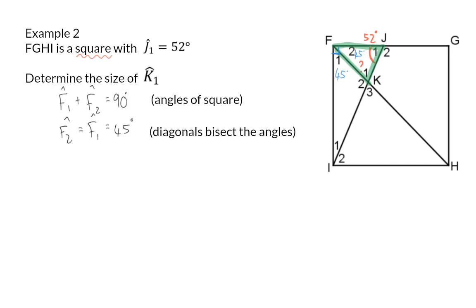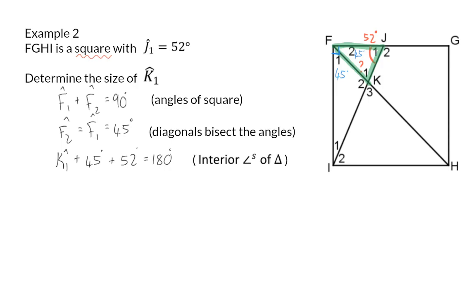Now, we know that angle K1, which we want to determine, plus the 45 degrees of angle F2, and the 52 degrees of angle J1, should add up to 180 degrees, because of the interior angles of a triangle. So, now we can calculate the size of angle K1, by taking the 180, and subtracting the 45 degrees, as well as the 52 degrees. So, K1 is equal to 83 degrees.